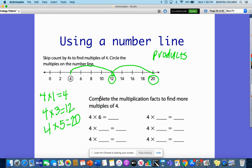You can use multiplication, you can use fact families, but anything that you multiply by four is going to give you a multiple. Here, four times six is 24, 24 is a multiple of four.